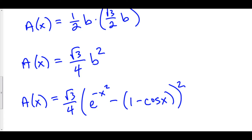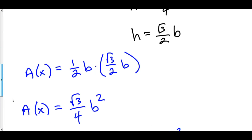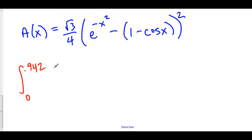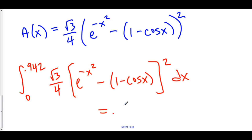Now that we have both our limits of integration as well as the area of our cross-section in terms of x, we can write out our integral for the volume: the integral from 0 to 0.942 of (√3/4) · (e^(−x²) − (1 − cos x))² dx. Using a graphing calculator or Wolfram Alpha to evaluate this, you would get approximately 0.2 — it's actually 0.1996 — and so that is the volume of this particular solid.